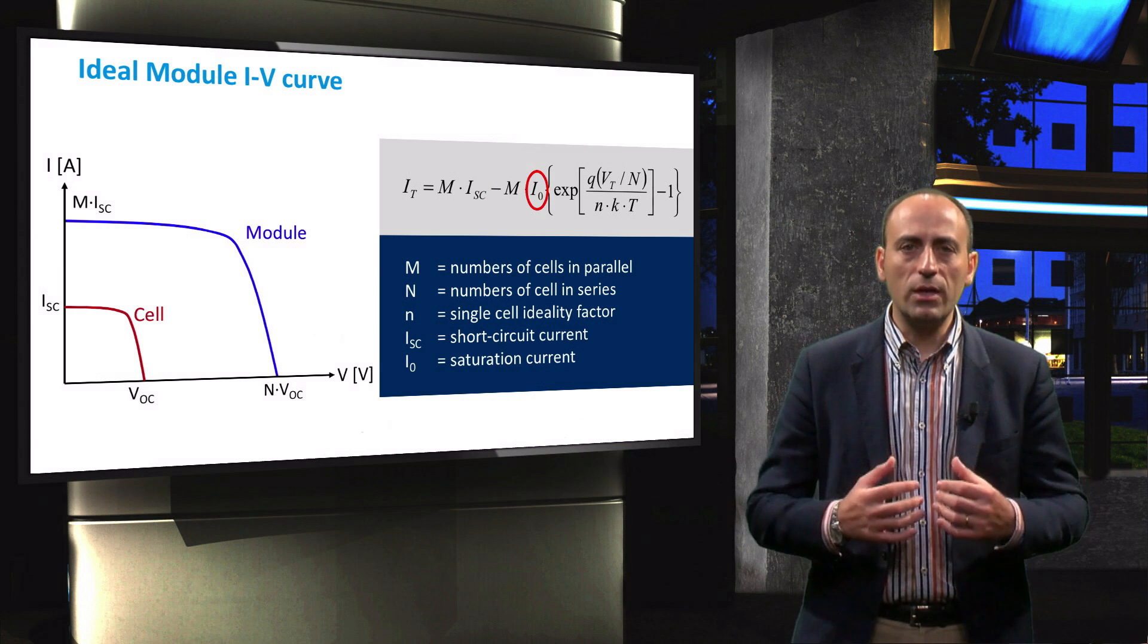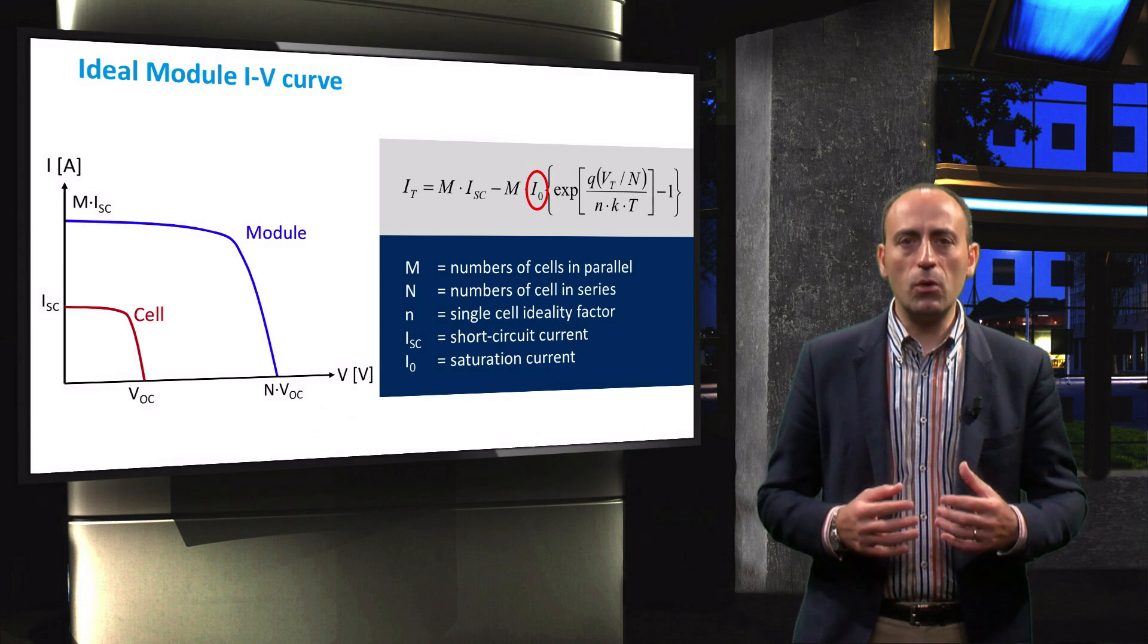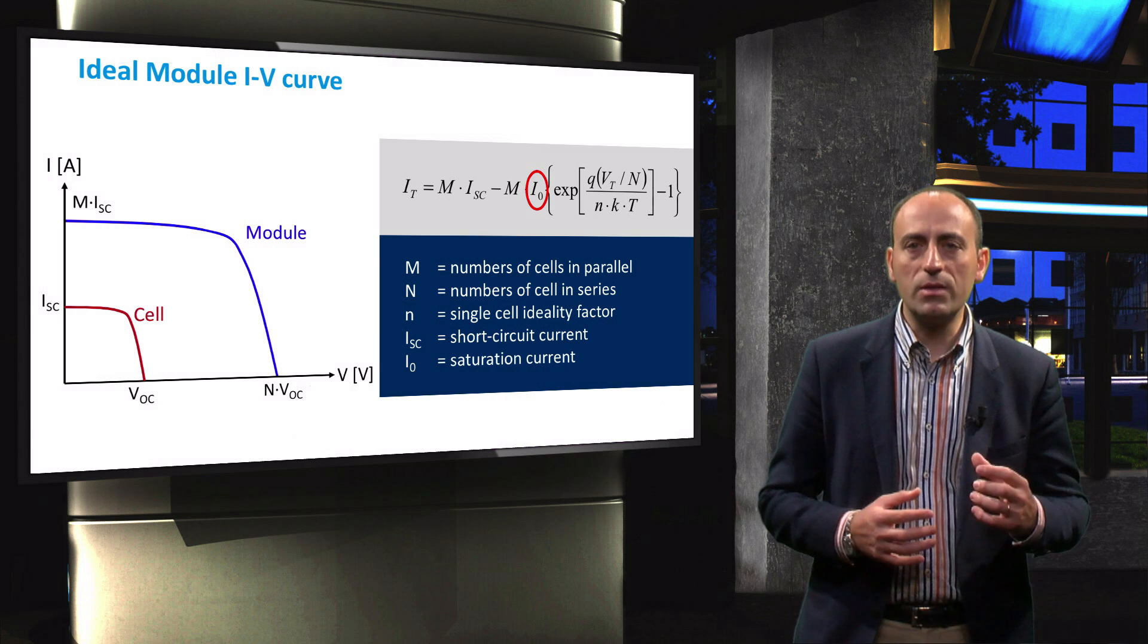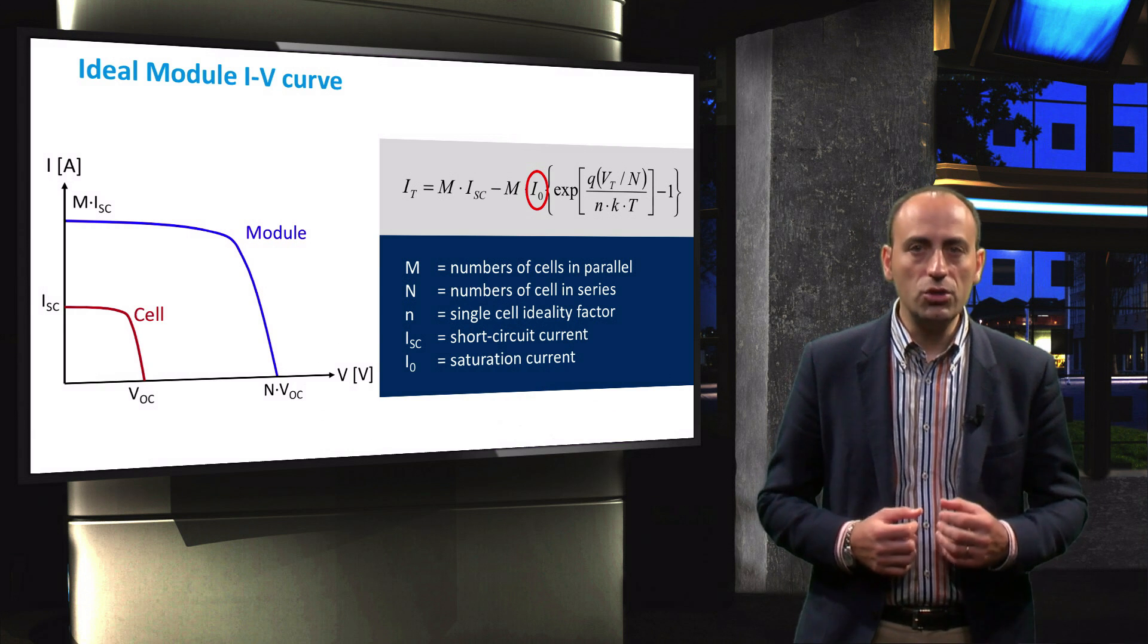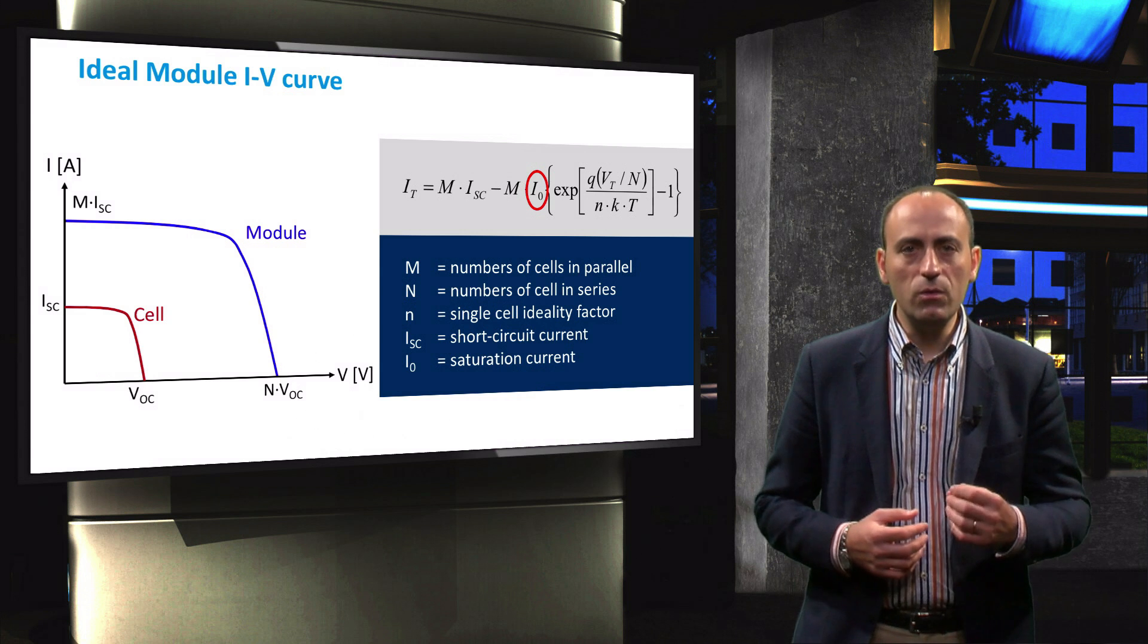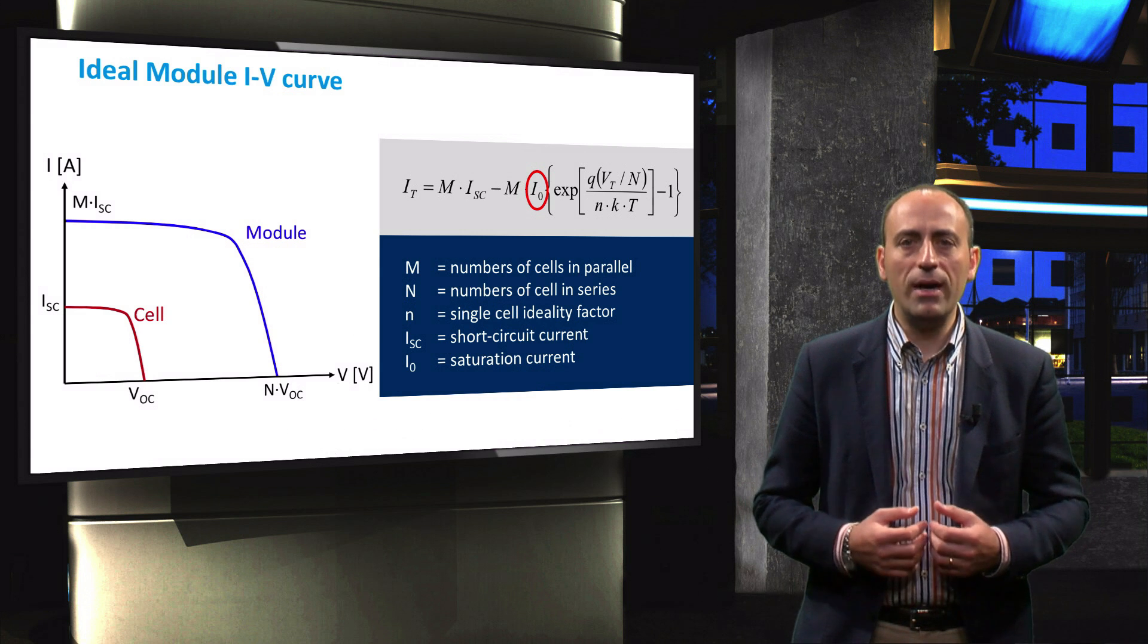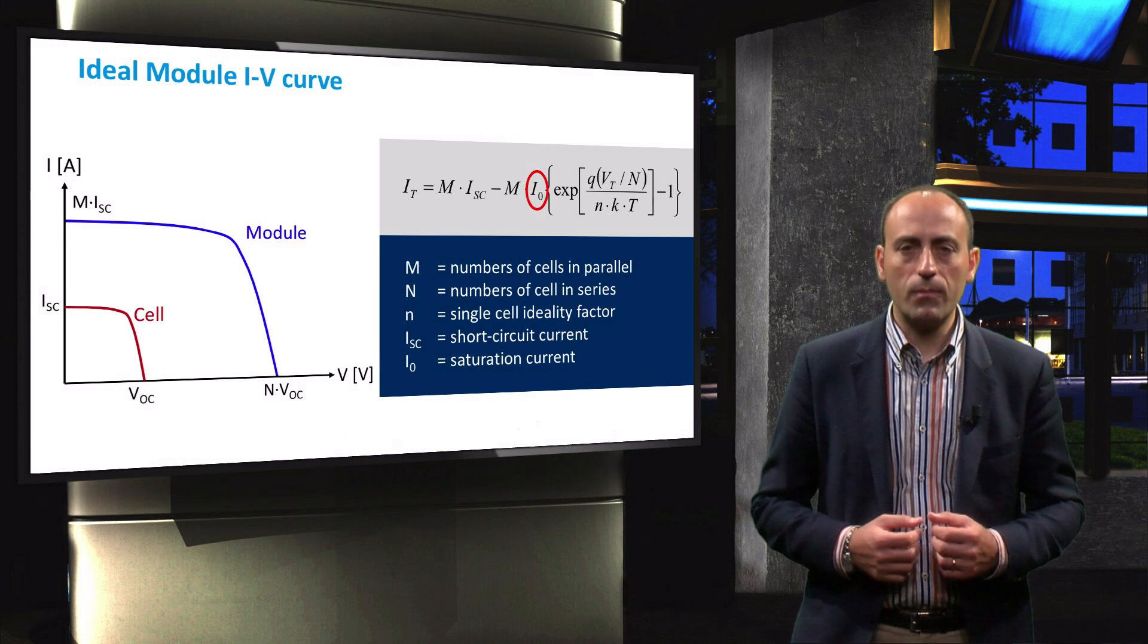Ideally, the total current of a PV module would be the product of the current of an individual cell and the number of cells in parallel. And the total voltage would be the voltage of an individual cell multiplied by the number of cells in series. However, as you can imagine, this is not the case in reality.